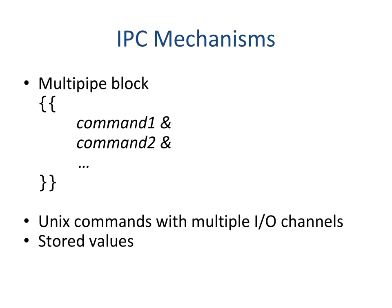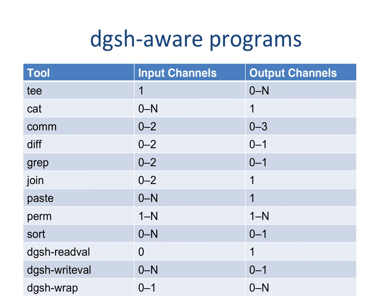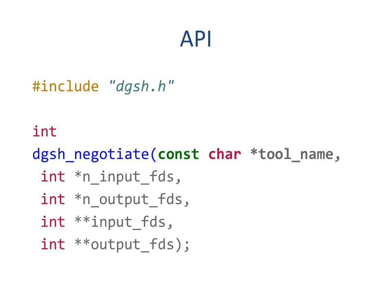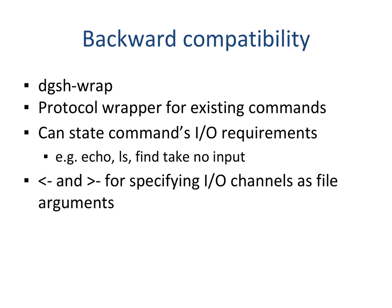DAX introduces three inter-process communication ways: multipipe blocks, Unix commands that can have multiple IO channels, and also stored values. To take advantage of DAX's multipipe capabilities we adjusted a number of Unix programs to allow them to take multiple inputs and produce multiple outputs. For example the com command can take as input two streams and produce as output three streams: the records occurring in the first stream, the records occurring only in the second stream, and the records occurring in both streams. An application programming interface allows programs to specify the number of inputs and outputs they support. A wrapper program allows existing programs to work within DAX with minimal fuss.